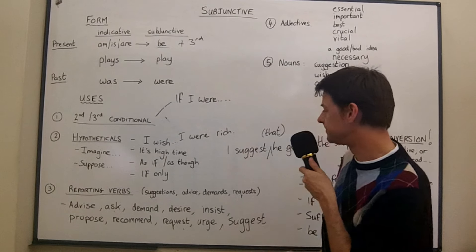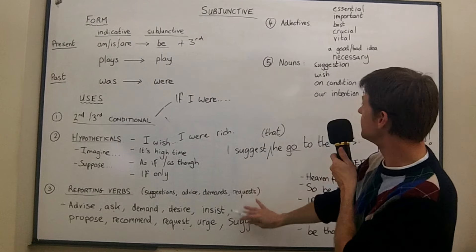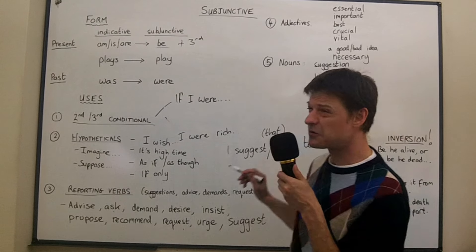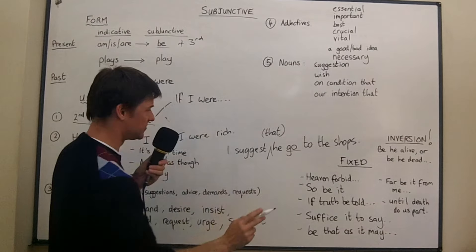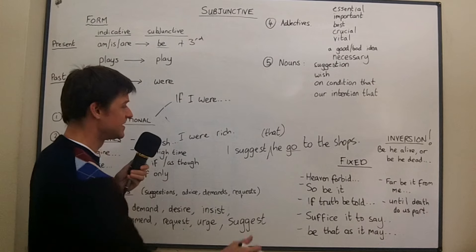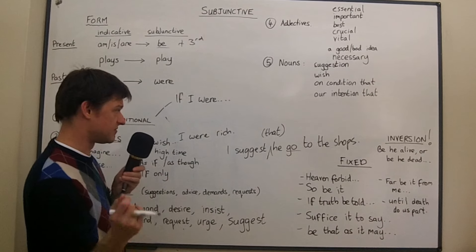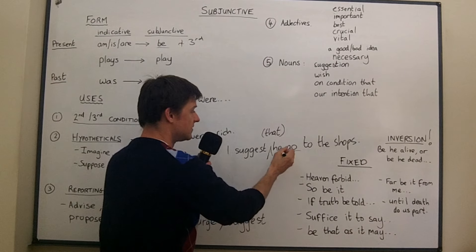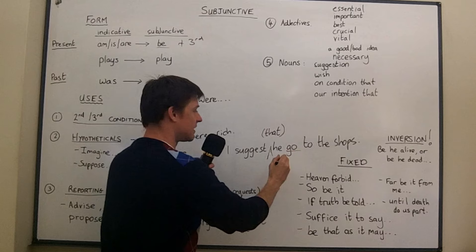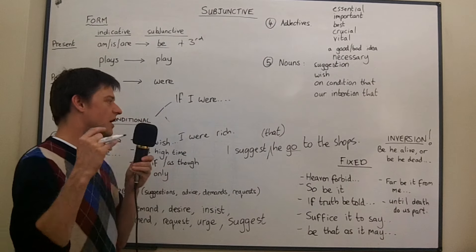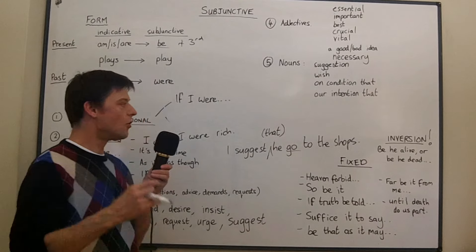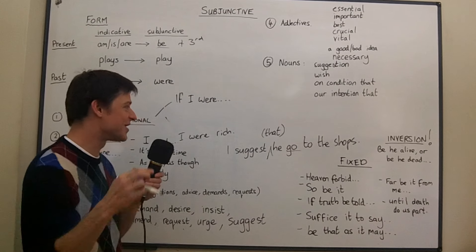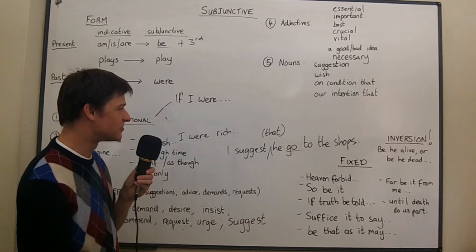So it's not just the reporting verbs where you'll see the subjunctive, but they do make things complicated because there are multiple possible forms. You can say: 'I suggest he go,' 'I suggest he goes,' 'I suggest that he should go,' or 'I suggest that he should go.' There are many forms possible with these reporting verbs.